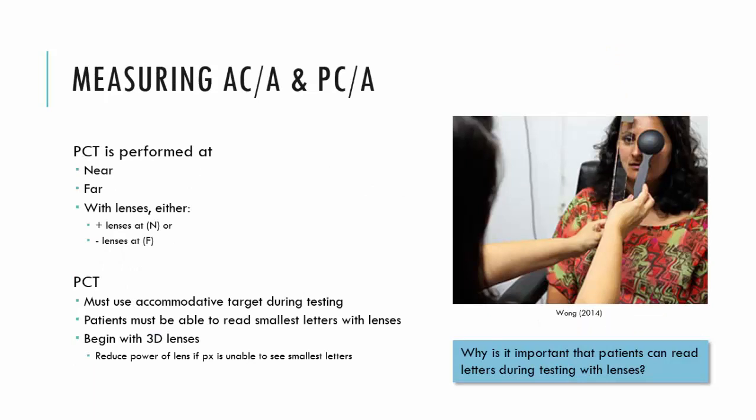To calculate an individual's ACA or PCR ratio, we measure the deviation at near and far. By measuring the deviation between near and far, we are changing the level of accommodation — assessing it at six meters, which simulates infinity, versus a third of a meter where we're accommodating by three diopters, assuming we're an emmetrope. So we're seeing a change between far and near of about three diopters.